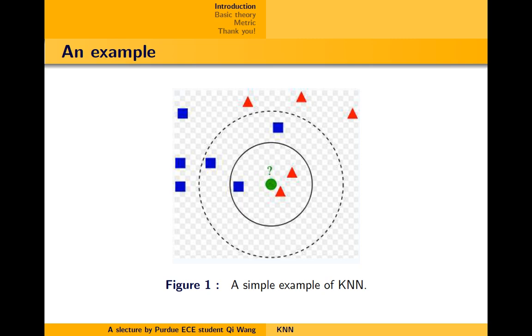Then if we enlarge k to be 5, then we have this larger circle like this. While in this circle, we have three blue points, while the number of red points stays at 2. Then the green point should be classified to be blue. Okay, so this is basically how KNN works.